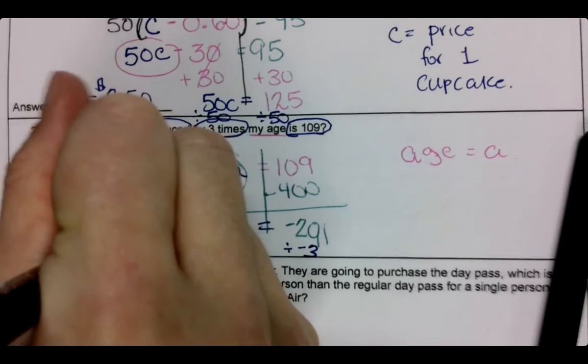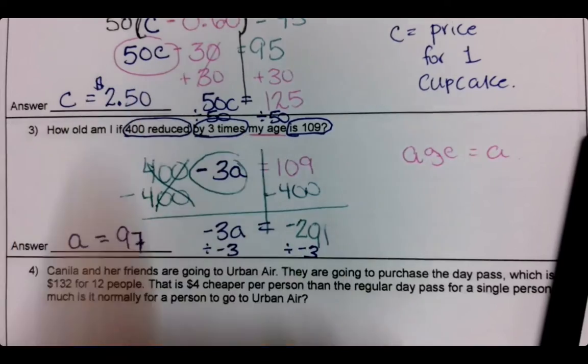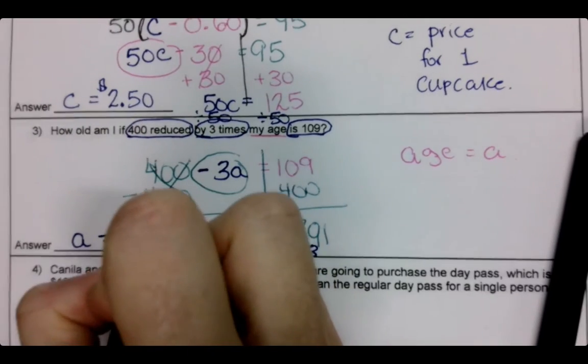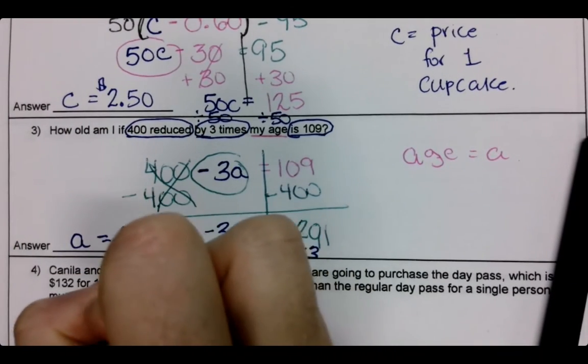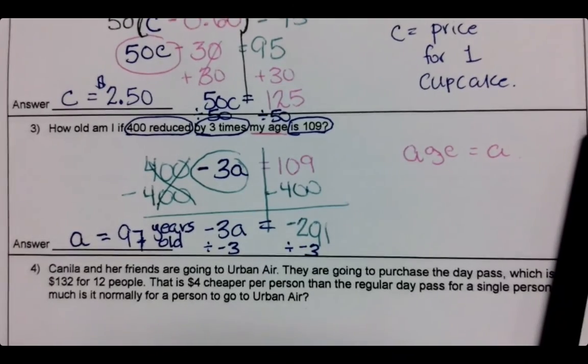97. I am an old fart. So 97 years old. Because A was age. I am an old, old fart man.